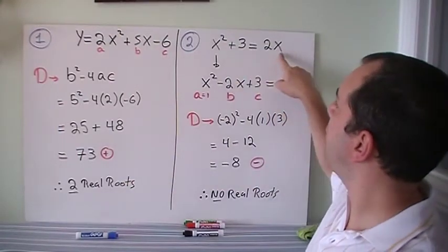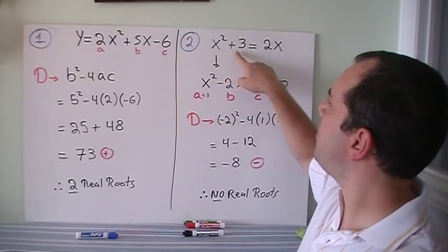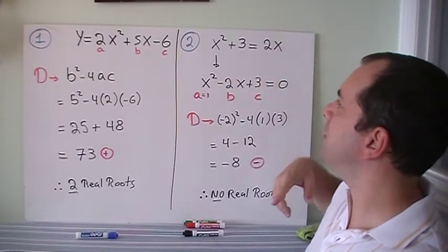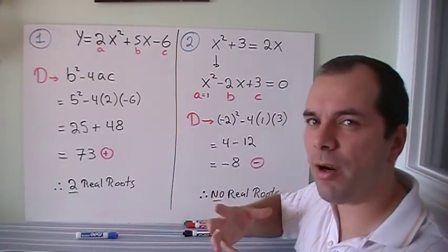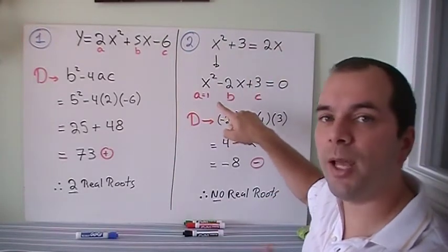And the other case is when you have something like this. I don't have a y equals, I've got two sides of the equation: x squared plus 3 equals 2x. How many possible answers are there? I will bring this over to the other side so I know what my a, my b, and my c are.